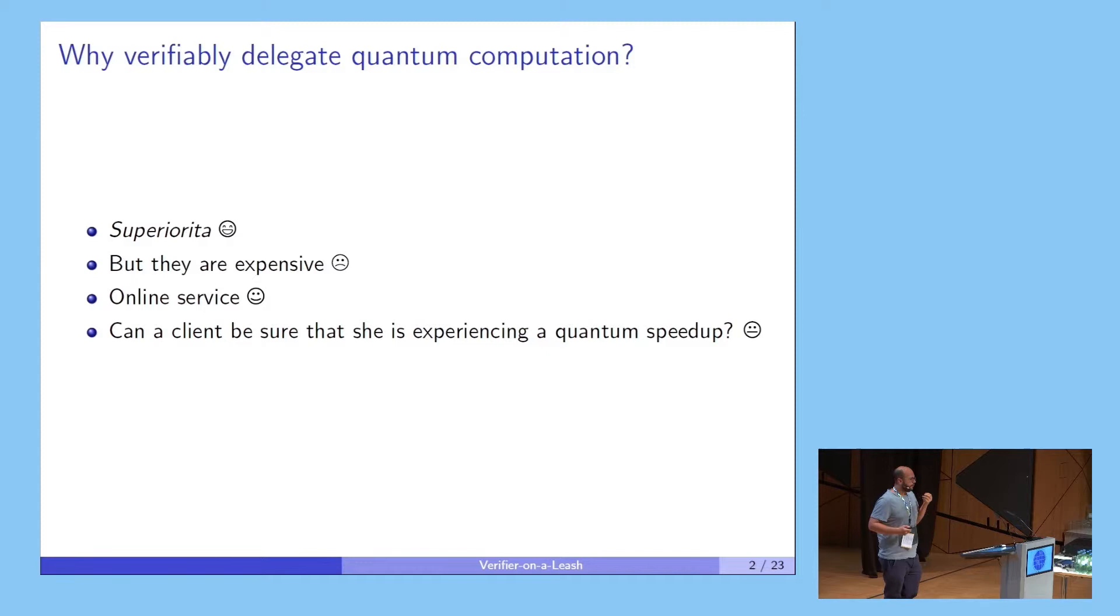how can you guarantee that the server is running a quantum computation? For some problems that are in NP, it could be easy - you just verify the solution. But for instance, if you were doing sampling, how can you guarantee that the sampling is being done from the right distribution?